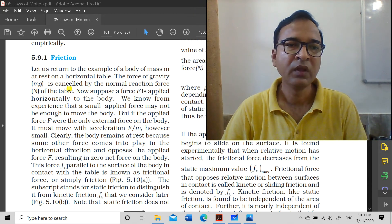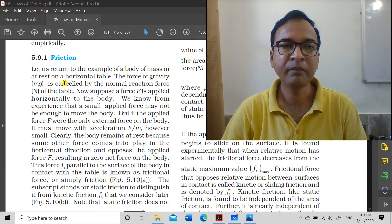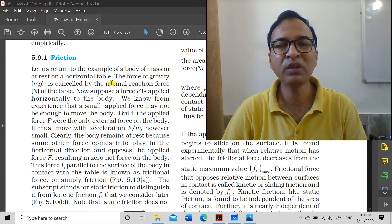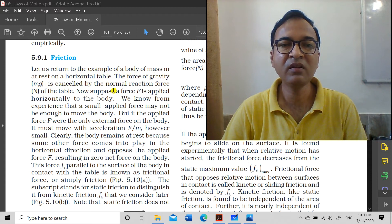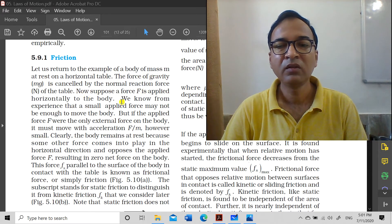What is friction and what is force of friction and how they are related? Let us return to the example of a body of mass m at rest on a horizontal table. The force of gravity mg is cancelled by the normal reaction force N of the table.